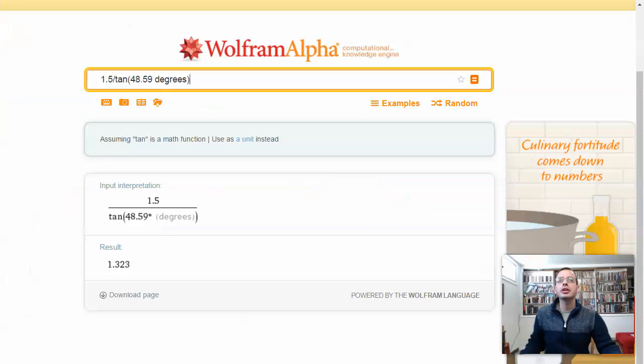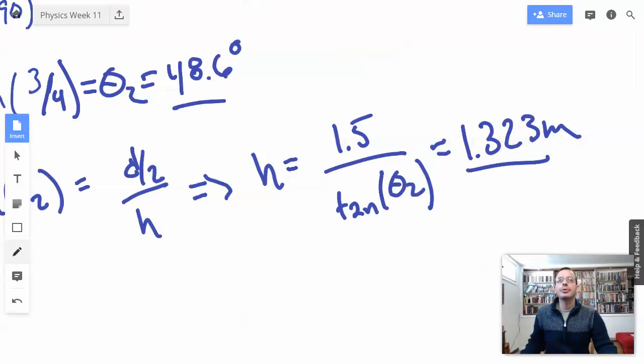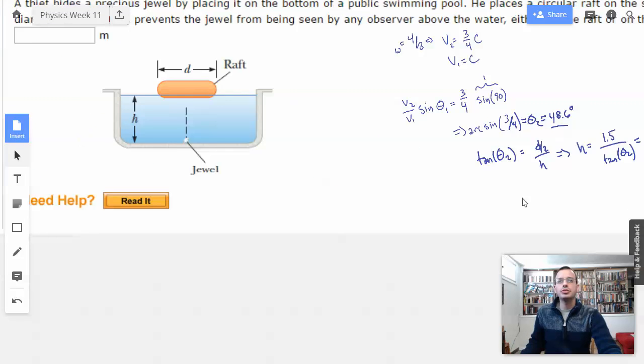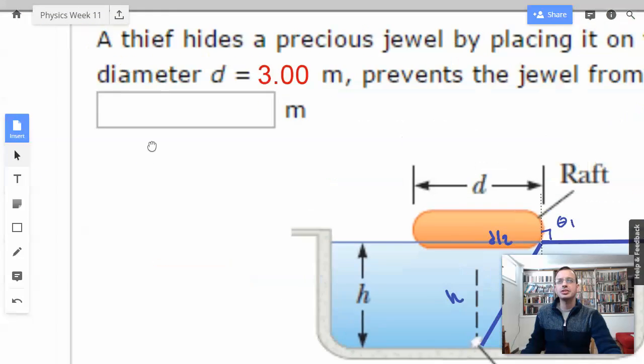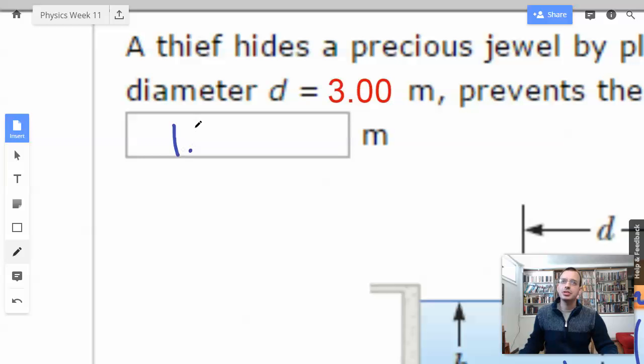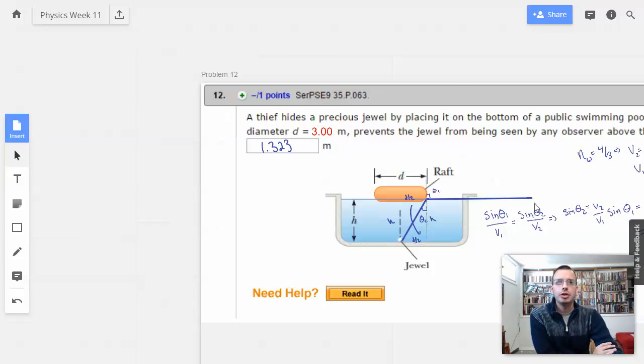Is that right? Click. 1.323. Yep. So 1.323 meters. That wasn't as hard as I thought it was going to be. For such a complicated question, it wasn't that hard to do. All right. So here we go. A little bit of backtracking.